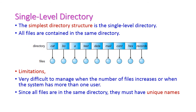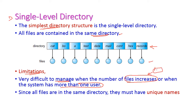The first level is the single level directory. This is the simplest directory structure — very straightforward — because all files are contained in the same single directory. The limitation is that it is very difficult to manage when the number of files increases or when the system has more than one user. If many files are stored in one directory it is hard to manage, and giving unique names to all files across all users is highly impractical. Hence the single level directory is very difficult to manage.